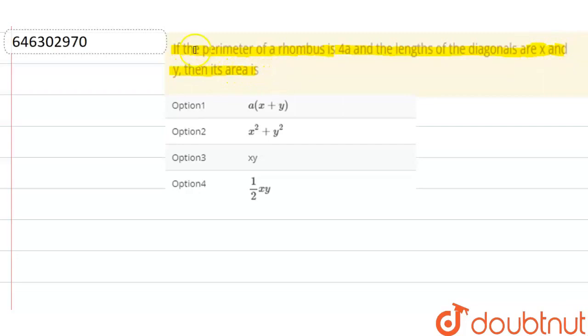Then its area is. The question is saying that if the perimeter of a rhombus is 4a, and the length of the diagonals are x and y, then its area is.